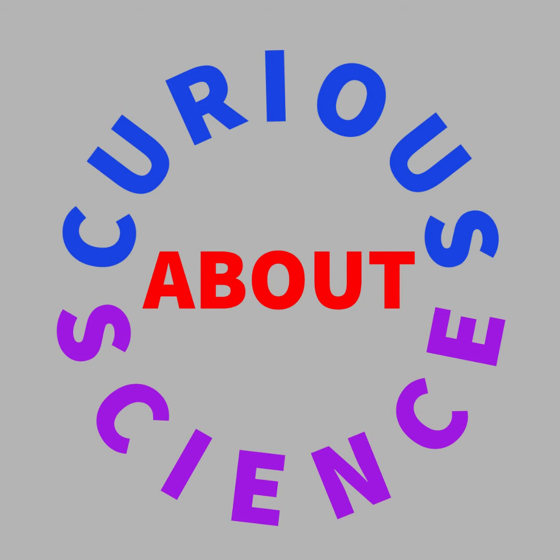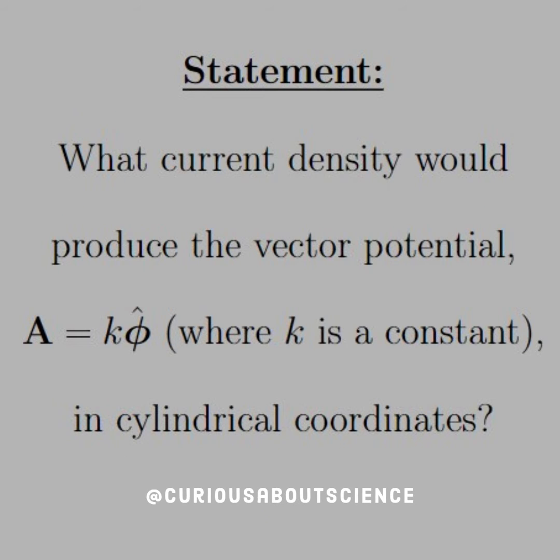Hey y'all, welcome back. We got a quick problem, so we'll just jump in. The statement reads, what current density would produce the vector potential A equal k phi hat, where k is a constant in cylindrical coordinates?